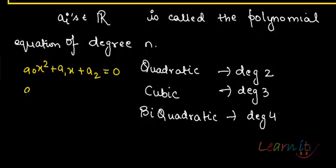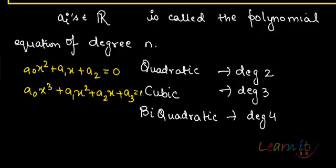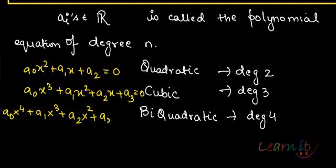A cubic would be a₀x³ plus a₁x² plus a₂x plus a₃ equals to 0. And for a bi-quadratic, you will have a₀x⁴ plus a₁x³ plus a₂x² plus a₃x plus a₄ equals to 0.